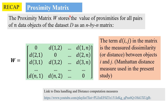As a recap, the proximity matrix stores the values of proximities for all pairs of n data objects. It is an n-by-n matrix, and how we compute this is from a previous video — the link is at the bottom of the slide.